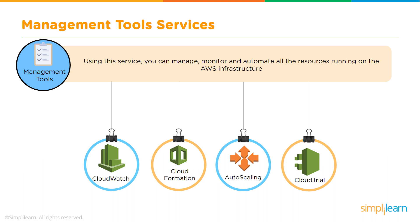Let's talk about the management tools and services available in Amazon. These help us manage, monitor, and automate all resources running in the AWS infrastructure. CloudWatch monitors the environment by receiving logs, creating dashboards, and sending alerts. CloudFormation lets us deploy new environments using just templates. Autoscaling handles dynamic traffic by dynamically scaling up and down the environment as needed. CloudTrail monitors and collects logs of all API calls to our environment, providing a searchable tool based on keywords and timestamps.